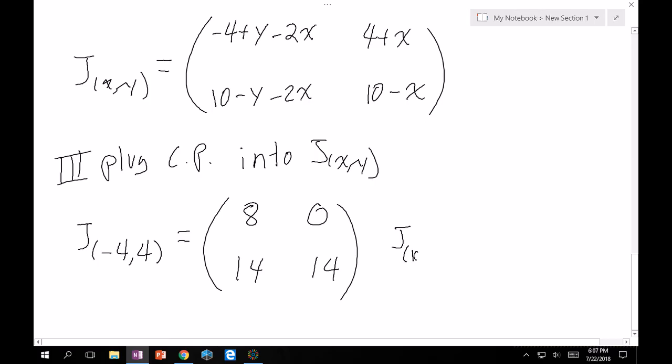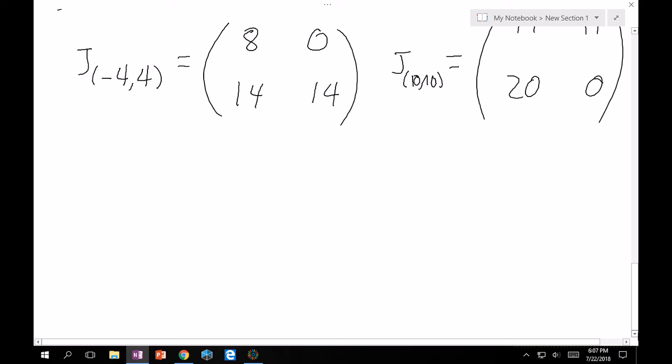Next point, 10, 10. To skip some computation, this gives minus 14, 14, minus 20, 0. This is the approximating linear system near the vicinity of critical point 10, 10. Finally, we have the origin. That just yields the constants that were in the Jacobian: minus 4, 4, 10, 10. This is the approximating linear system near the origin.